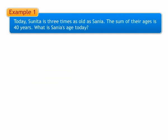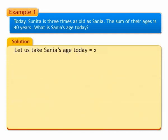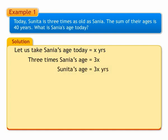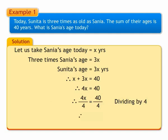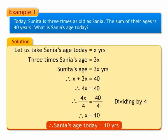Example 1: Today, Sunita is 3 times as old as Sanya. The sum of their ages is 40 years. What is Sanya's age today? Let us suppose Sanya's age today is x years. 3 times Sanya's age is 3 into x years. According to conditions given in the problem, Sunita's age is 3x years. Sum of their ages is 40. Adding we get 4x is equal to 40. Dividing both sides by 4, we get x is equal to 10. Hence, Sanya's age is 10 years today.